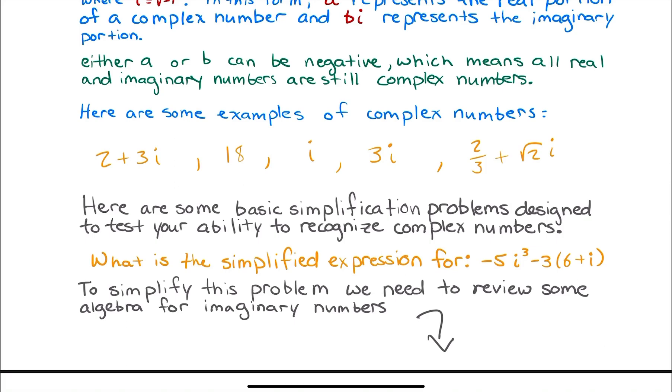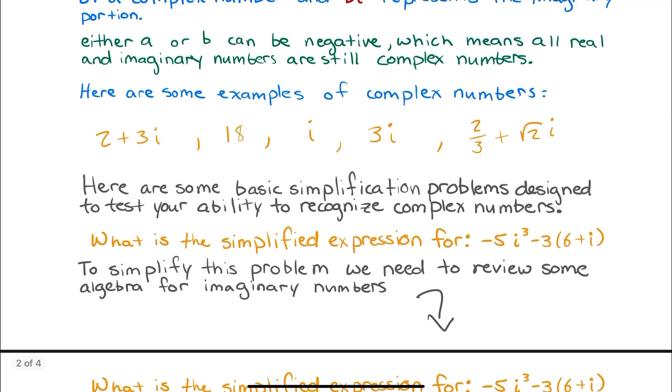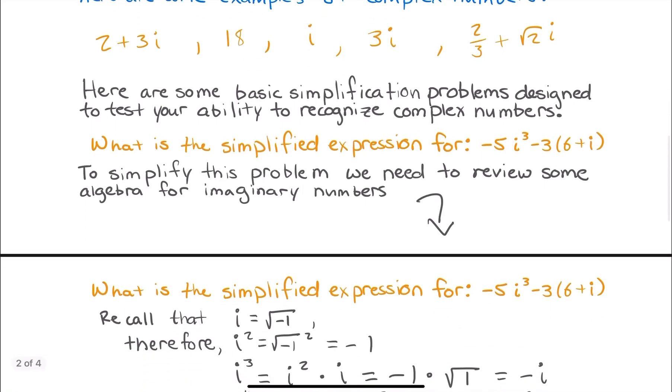So here are some basic simplification problems designed to test your ability to recognize complex numbers. So here's the question in orange. What is the simplified expression for negative 5i cubed minus 3 times the quantity 6 plus i? So to simplify this problem, we are going to need to actually review some algebra for imaginary numbers.